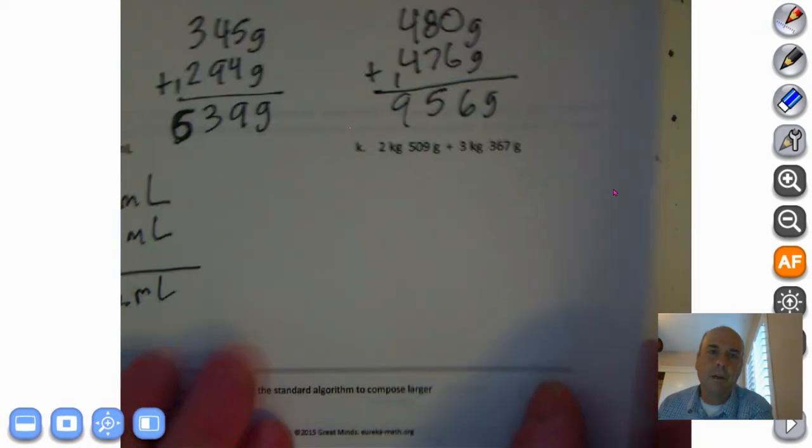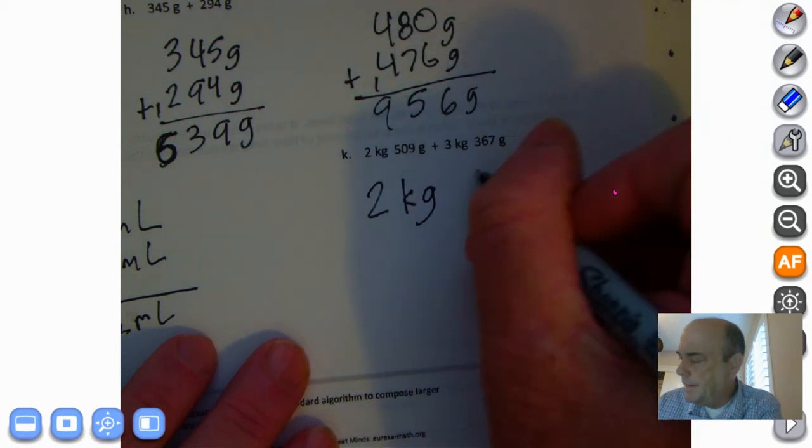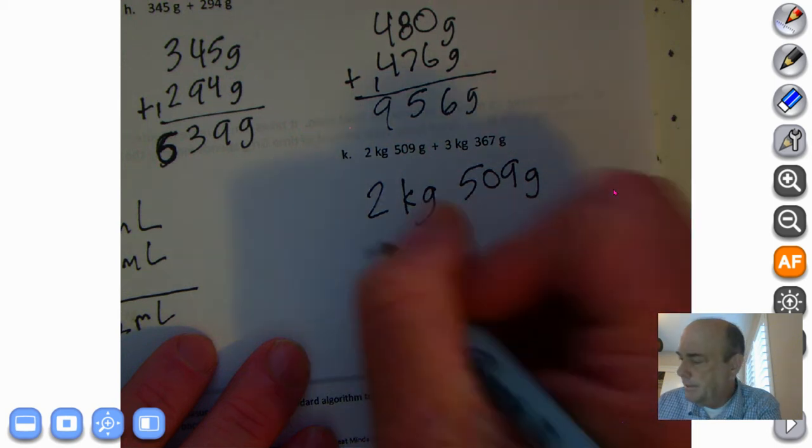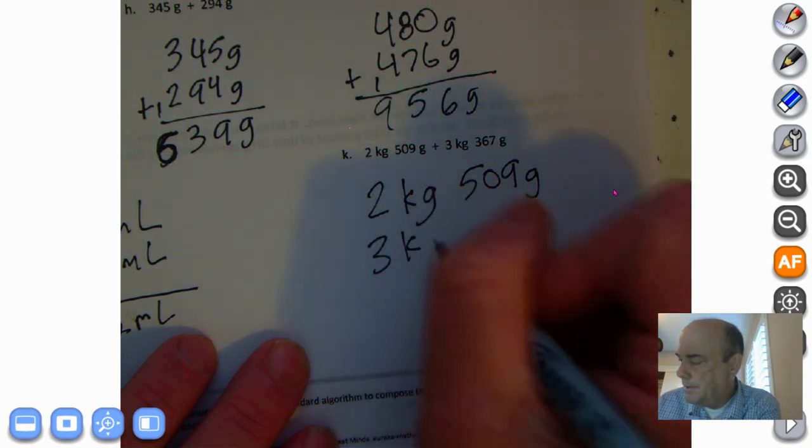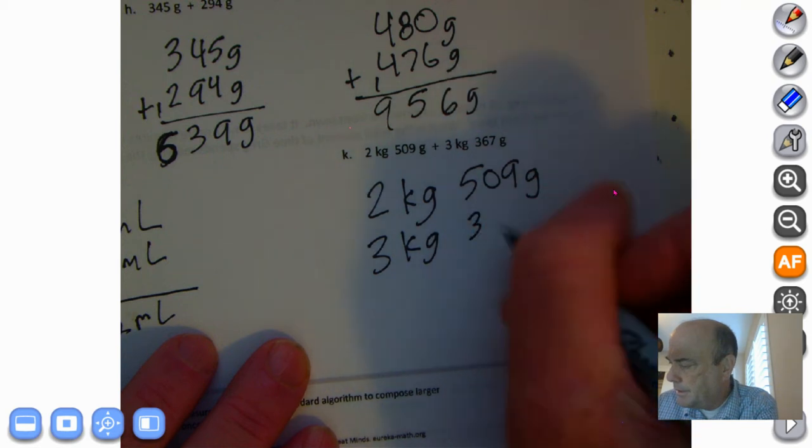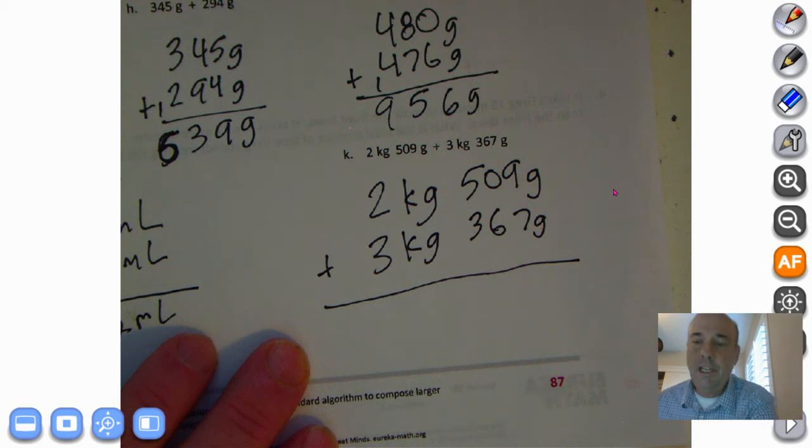Let's go do some kilogram work now. Two kilograms, 509 grams, plus three kilograms, 367 grams. So go ahead and after you set up this problem vertically, pause the recording and try this on your own.